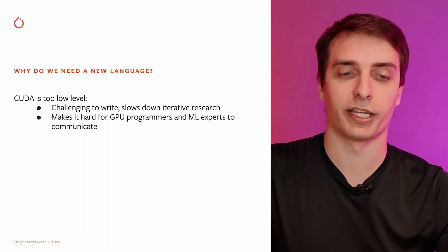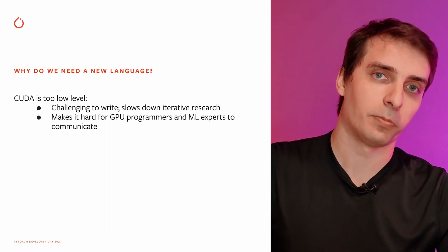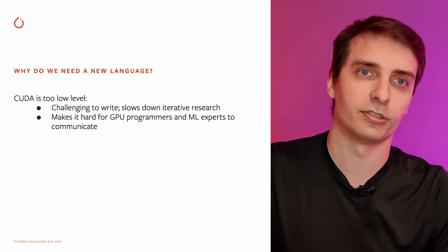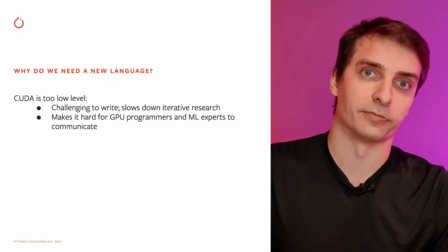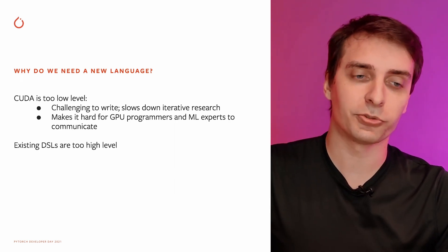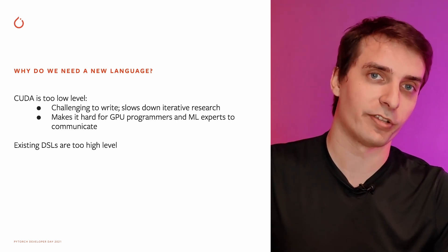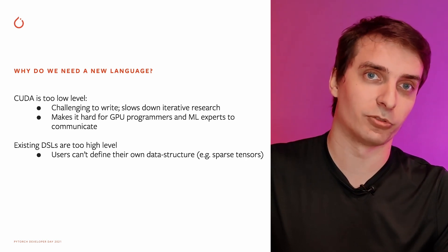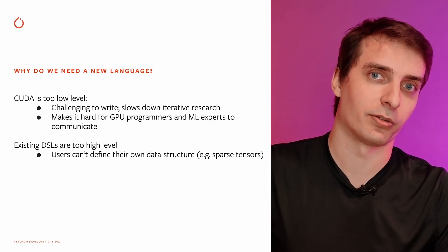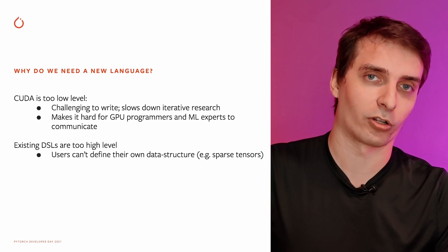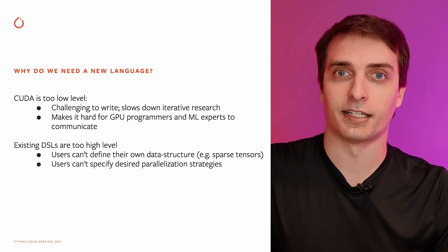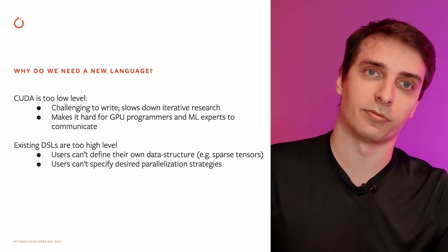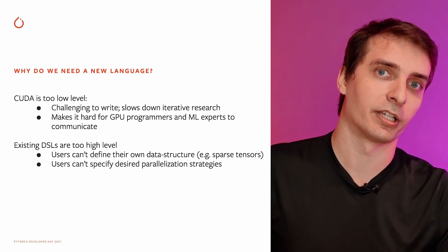Another issue with CUDA is that it's really hard to communicate between GPU programmers and machine learning experts. For example, some GPU programmers might have constraints on how they need to design their kernels, such as some data needing to be pre-computed, and it's not always clear to the outside eye what should be the case. There are also other high-level languages and compilers available, such as TVM or some dialects of MLIR, but these are not perfect either. Users cannot really use them to define their own data structures — if you have a sparse tensor or a triangular matrix, you're generally out of luck. And they don't really give you control over how to schedule work across the GPU, such as which SM should do what or how the L2 cache should be partitioned.